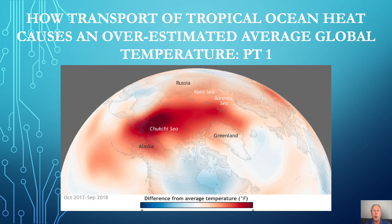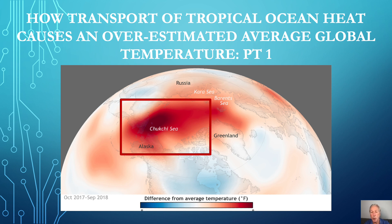The Arctic has warmed dramatically, but why? A few researchers simplistically suggest it's polar amplification of greenhouse warming, but that explanation fails to explain why at the southern pole most of Antarctica has never warmed. This video explains how extensive transport of tropical ocean heat uniquely warms the Arctic.